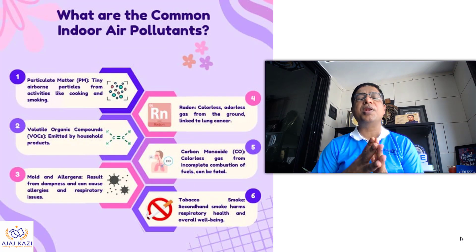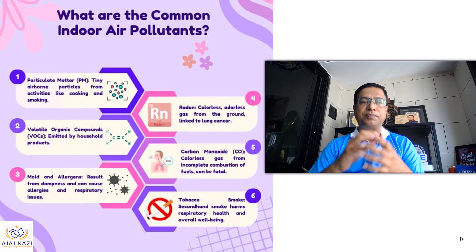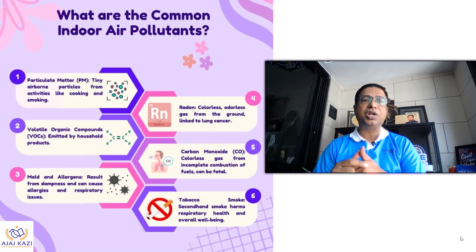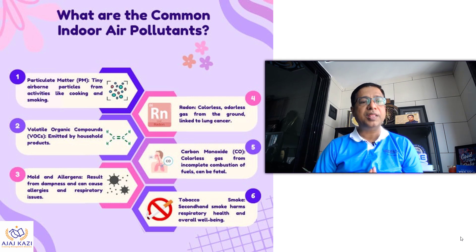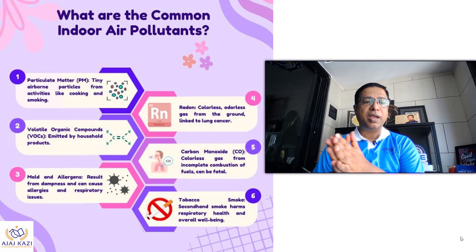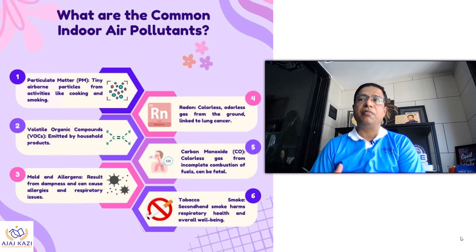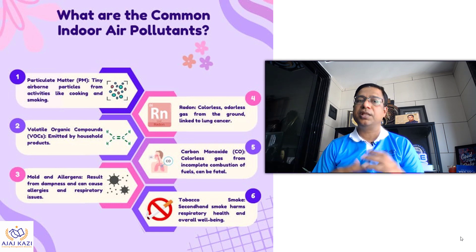What are the common indoor air pollutants? We are talking about particulate matter — tiny airborne particles within the air which we cannot see. They are generally present in the air. Then there are volatile organic compounds, VOCs, emitted by household products. We talk about the carpet, we talk about the ceiling — these emit those VOCs.